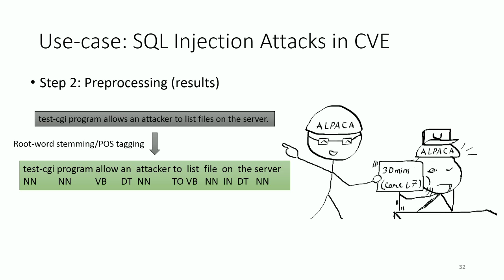Here is an example of the text after preprocessing. The result is a root word version of the original text with corresponding part-of-speech tags.